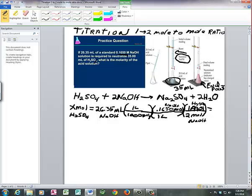We take 26.35, divide by 1,000, then multiply times 0.1650, and then divide by 2 because of the mole to mole ratio. That gives us 2.17 times 10 to the minus 3 moles.